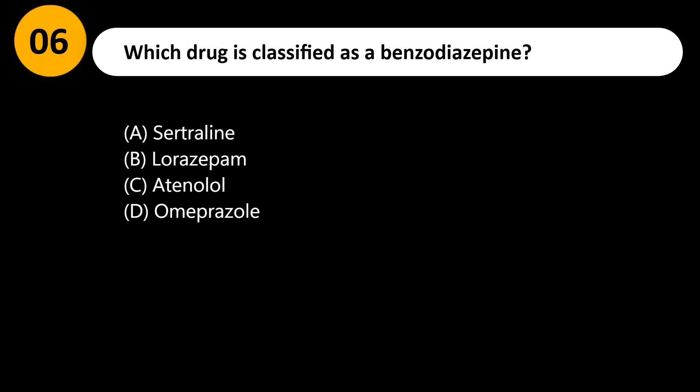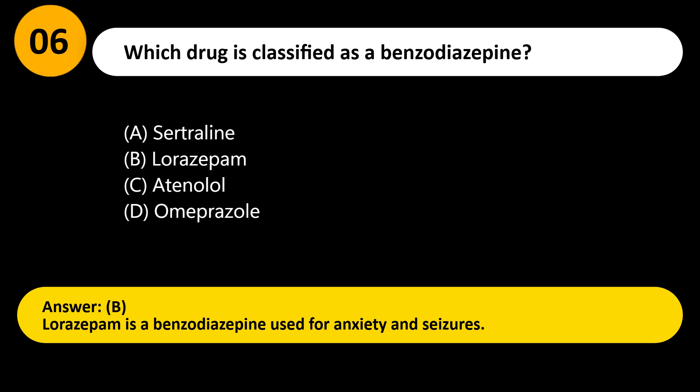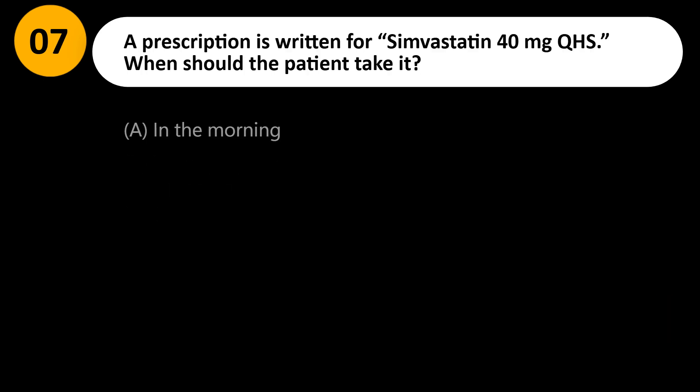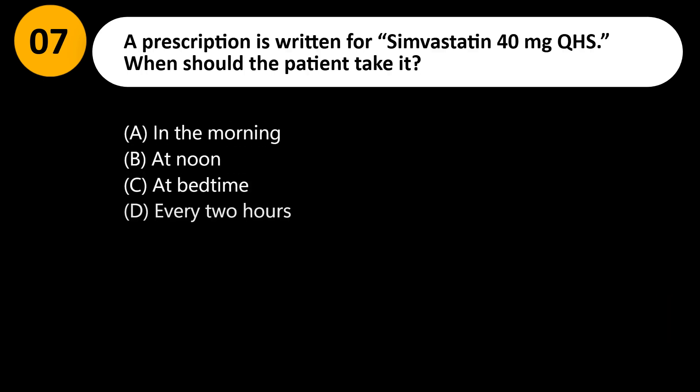Which drug is classified as a benzodiazepine? A) Sertraline, B) Lorazepam, C) Atenolol, D) Omeprazole. Answer: B. Lorazepam is a benzodiazepine used for anxiety and seizures.